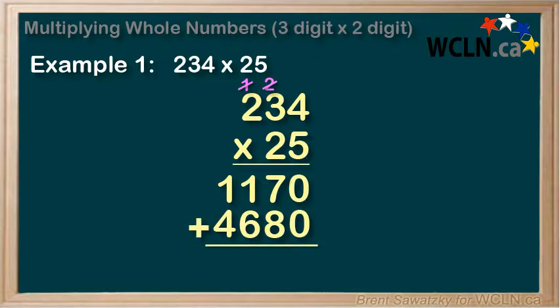0 plus 0 equals 0. 7 plus 8 equals 15 — we put the 5 down and carry the 1. 1 plus 6 equals 7, and we add our extra 1 for 8. And finally, 1 plus 4 equals 5. So our final answer is 5850.